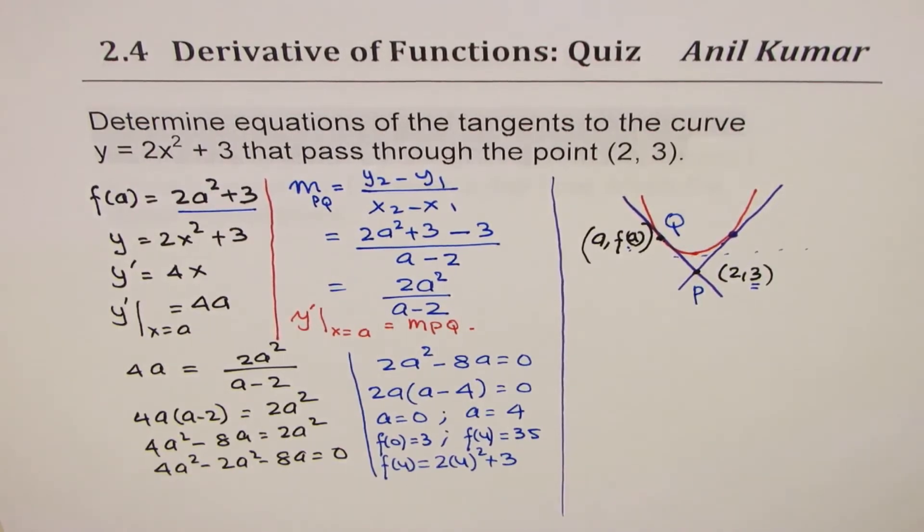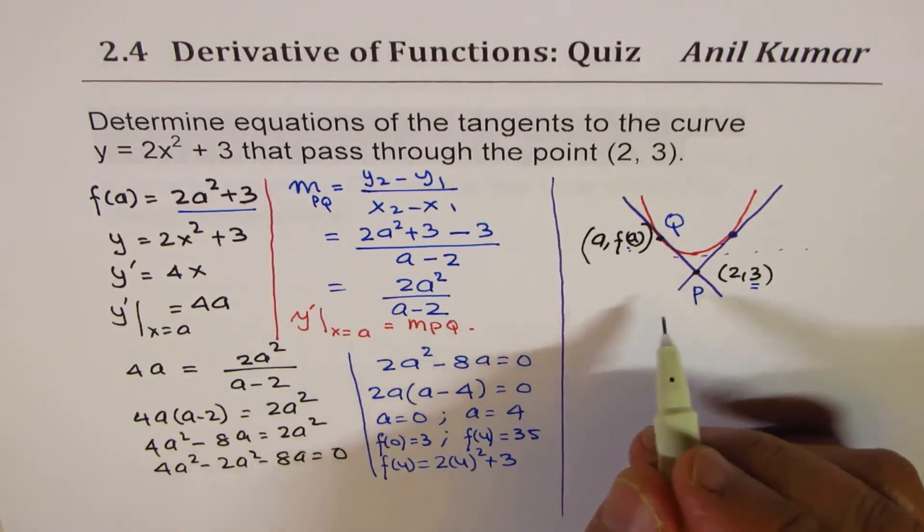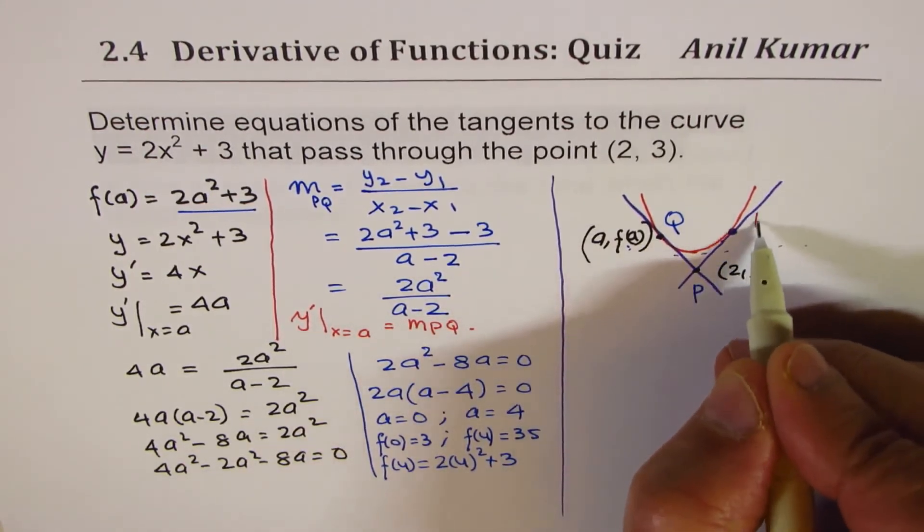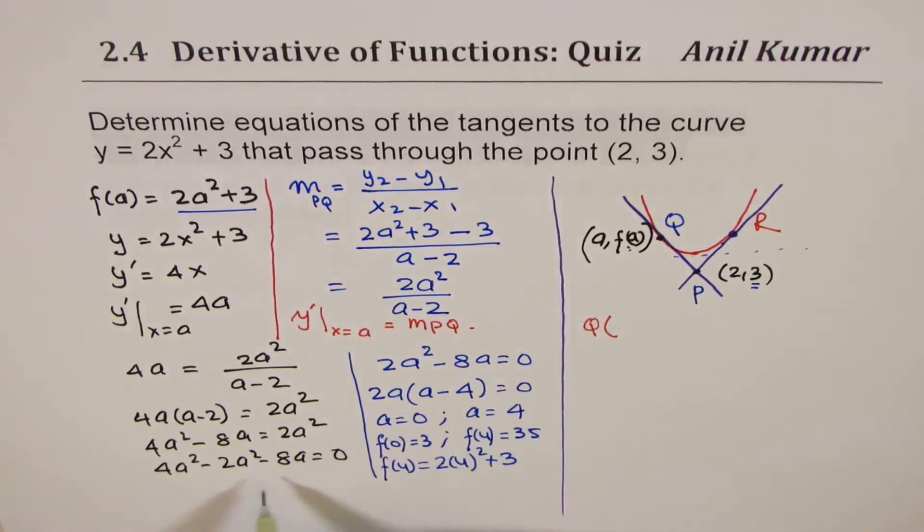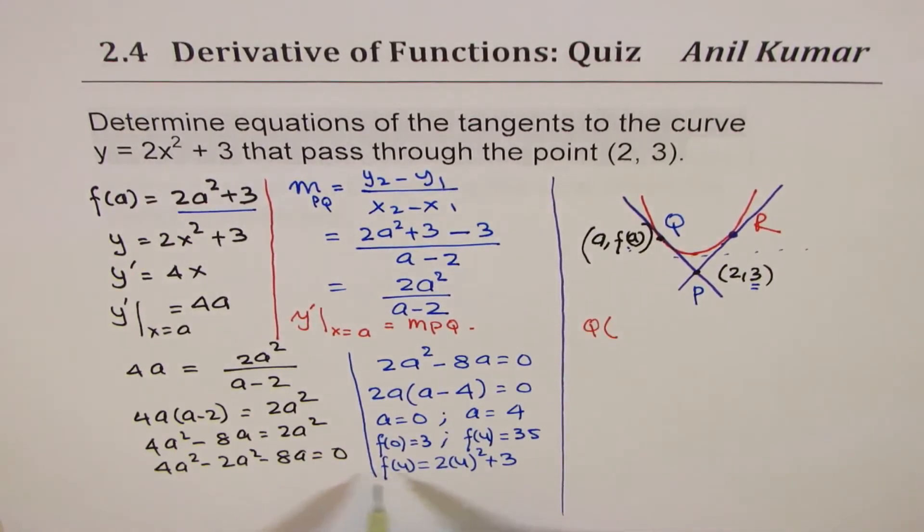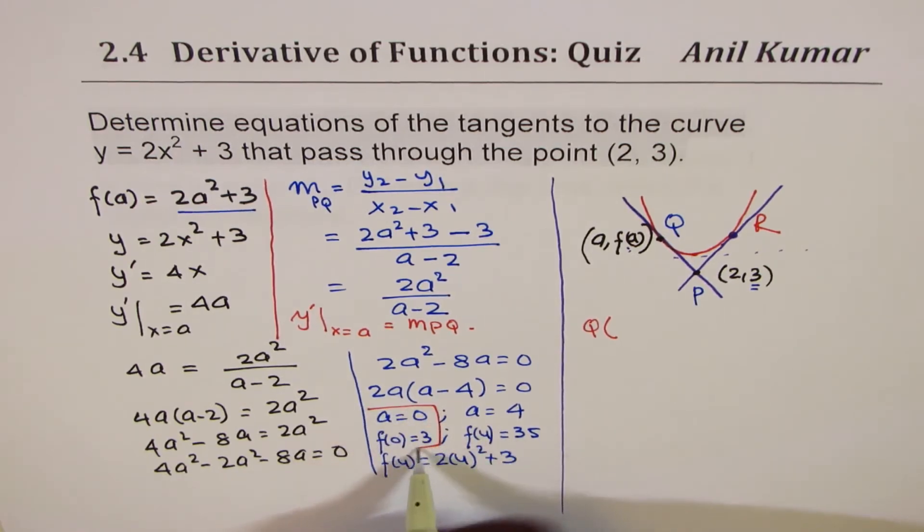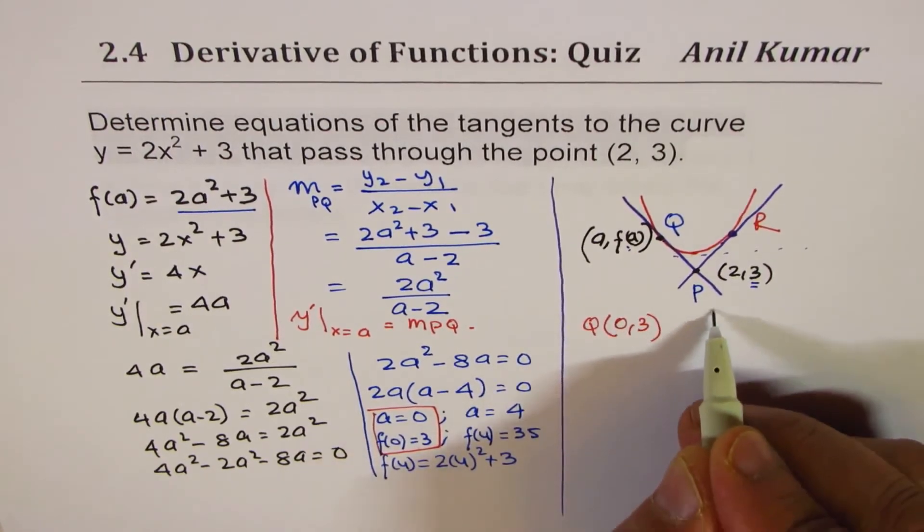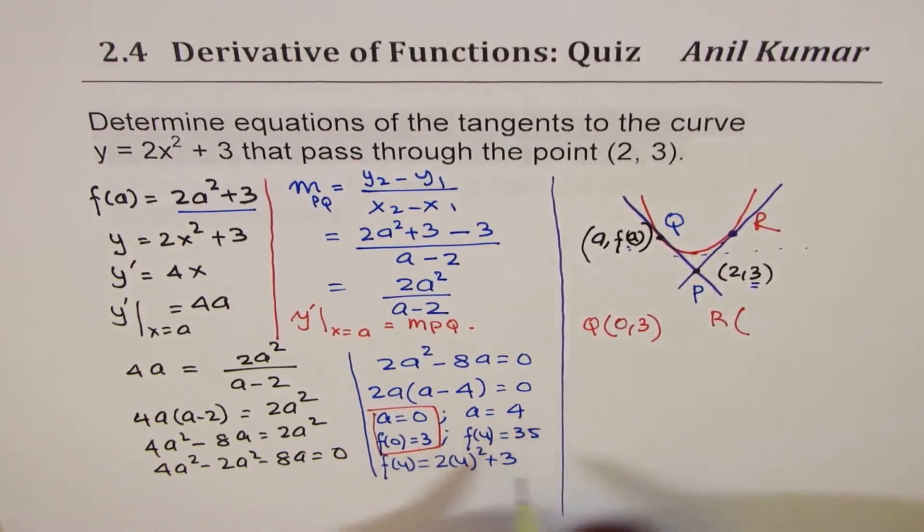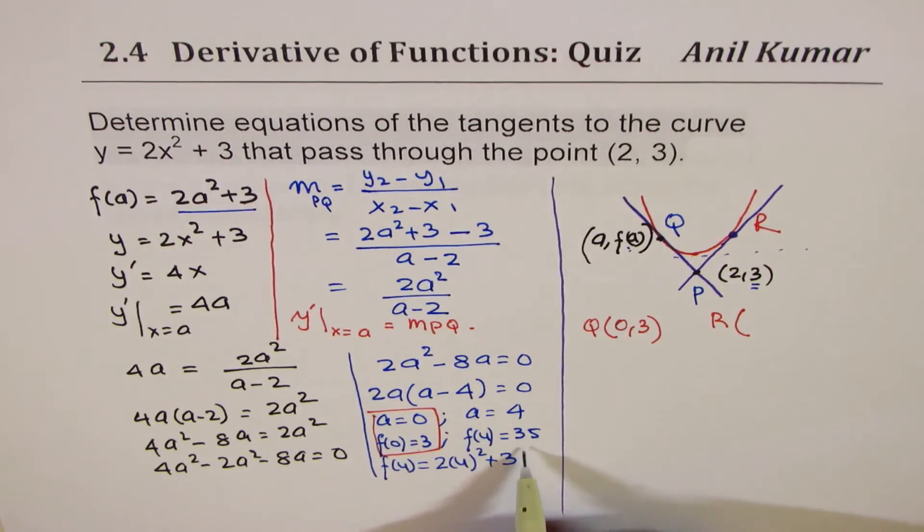So basically, we got these two points. So we have two points we'll call Q and R. Point Q for us is (0, 3), and R for us is (4, 35).